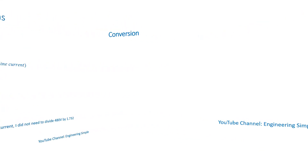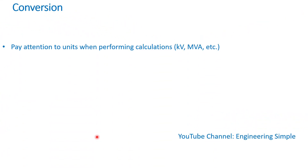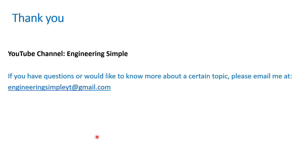When dealing with transformer calculations, pay attention to units — kV, MVA, and so on. Don't mix single-phase and three-phase quantities. For delta connections, the phase voltage equals the line-to-line voltage, but the line current equals √3 times the phase current. For Y connections, the phase current equals the line current, but the line-to-line voltage equals √3 times the phase voltage. That's it for this video — thank you and have a good day.